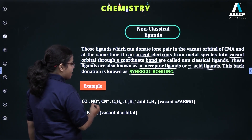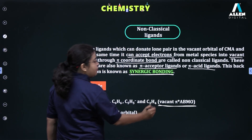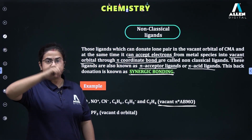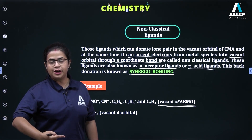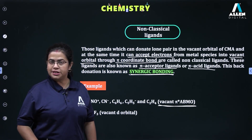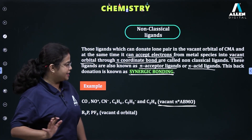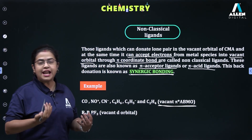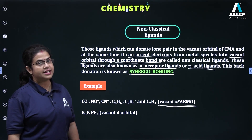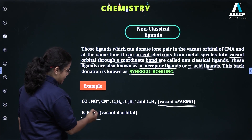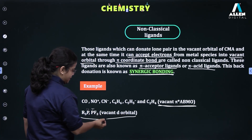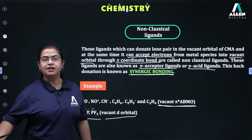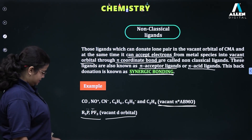These ligands have vacant pi* (pi-star) anti-bonding molecular orbitals — ABMO stands for anti-bonding molecular orbital. Recall from MOT: bonding molecular orbitals and anti-bonding molecular orbitals include sigma, pi, sigma*, and pi*. These non-classical ligands have vacant pi* anti-bonding MOs which accept electrons from the d-orbitals of the central metal atom or ion. Some ligands like phosphorus-containing ones also have vacant d-orbitals for accepting electrons.